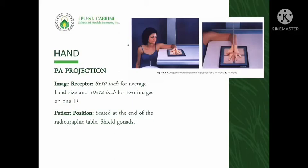For the hand PA projection, we can use two different sizes of image receptor depending on how many projections will be performed on it. We can use 8x10 in lengthwise orientation for a single projection, or 10x12 in crosswise orientation for two projections on one IR.